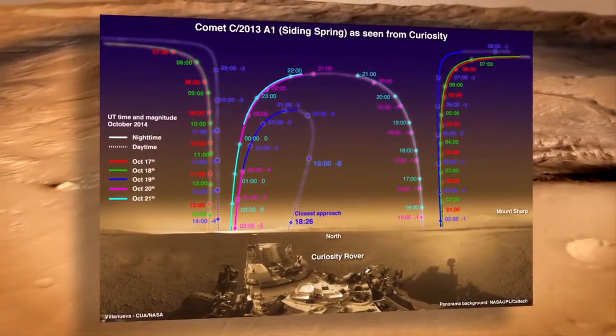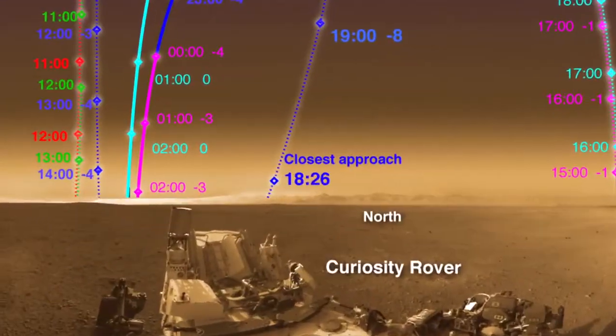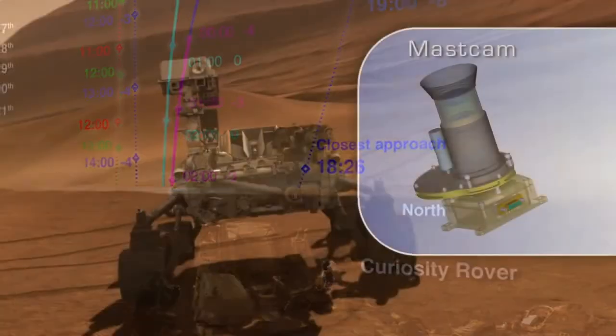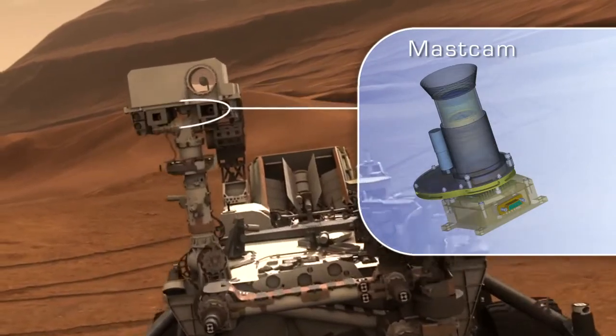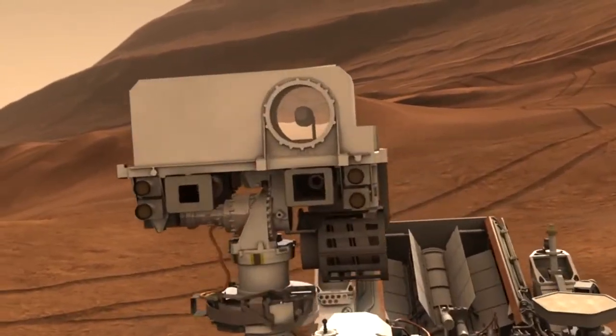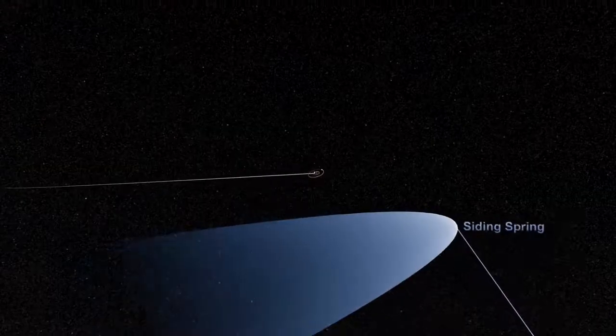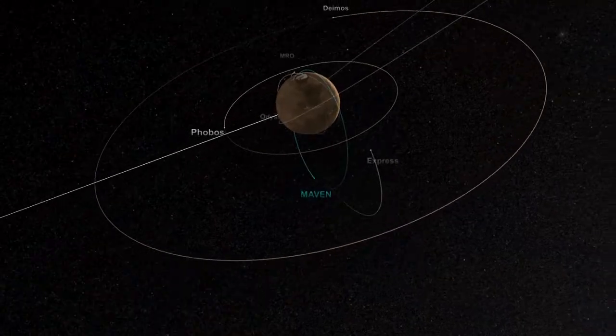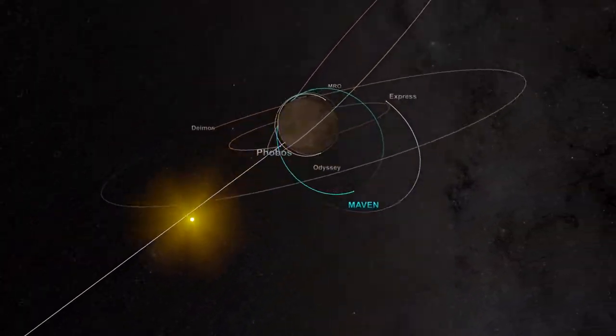At Gale Crater, NASA's Curiosity rover will turn its gaze skyward for several days surrounding the flyby. Curiosity's MastCam will study the comet's general features, while the ChemCam instrument will look at its chemical makeup. Although Curiosity and its fellow rover Opportunity will be protected from comet dust by the Martian atmosphere, the same cannot be said for spacecraft orbiting above Mars.